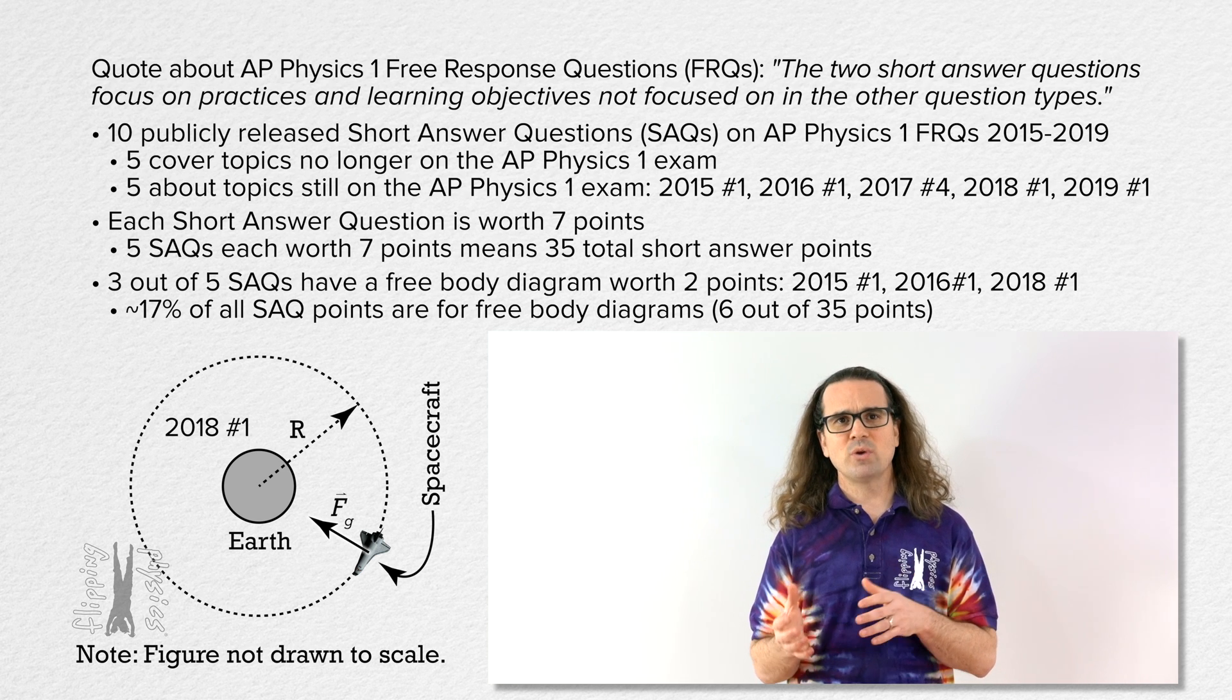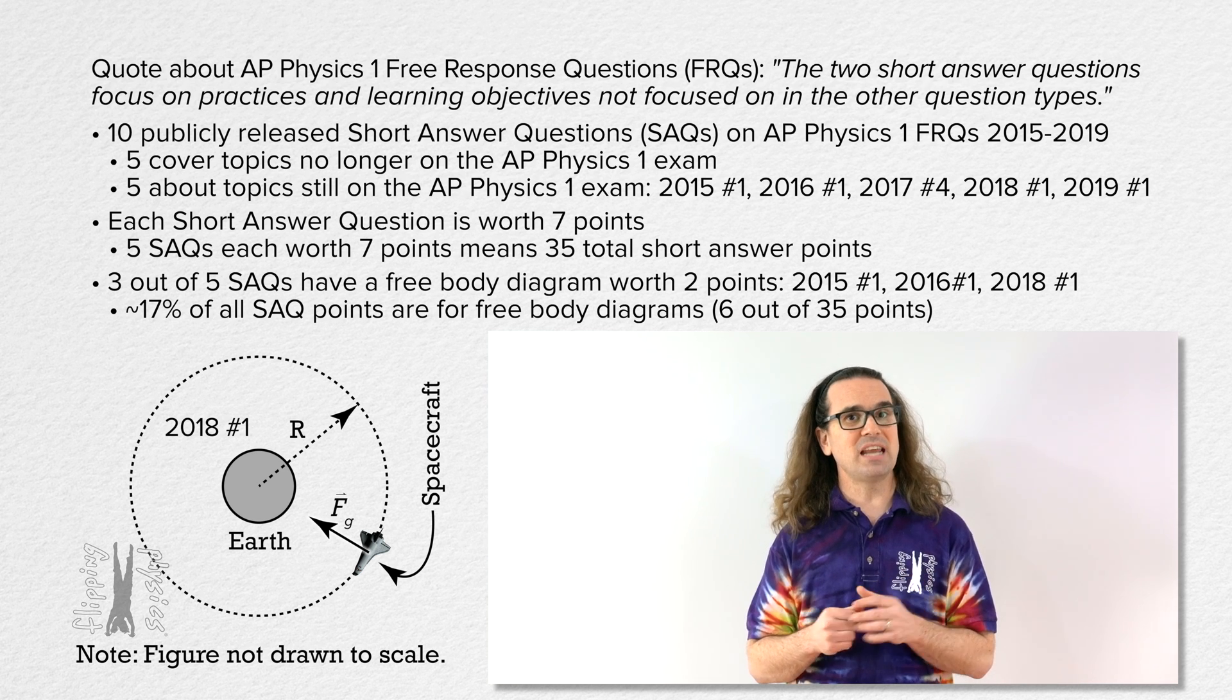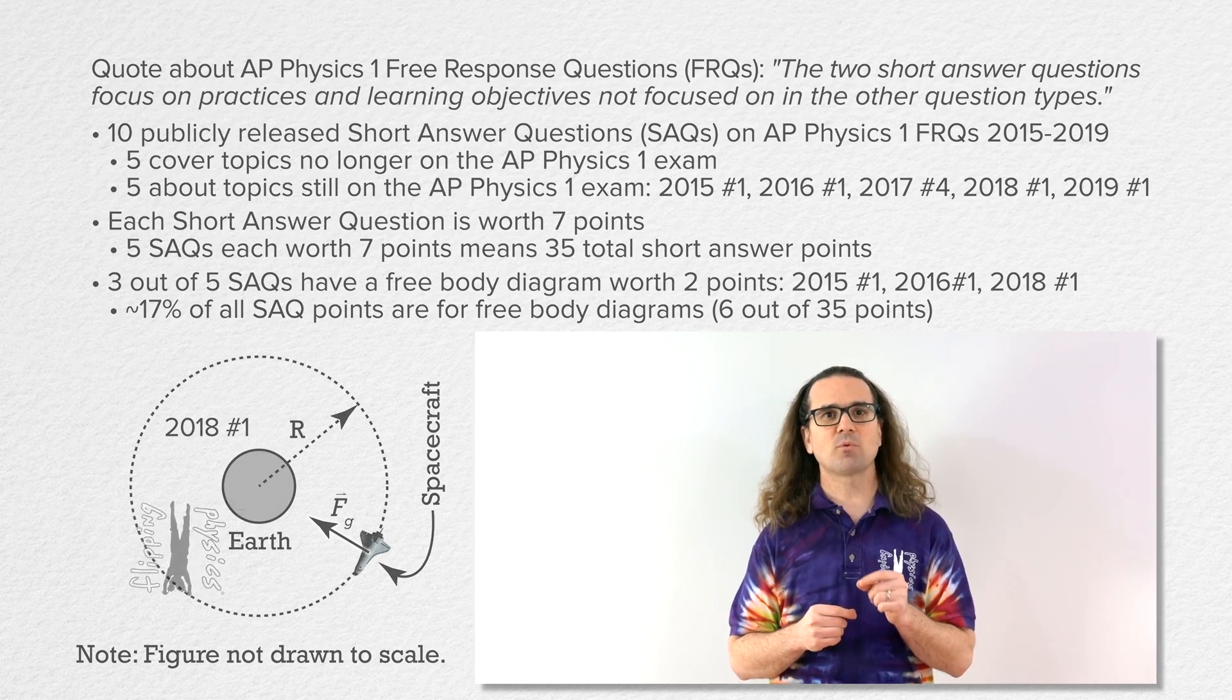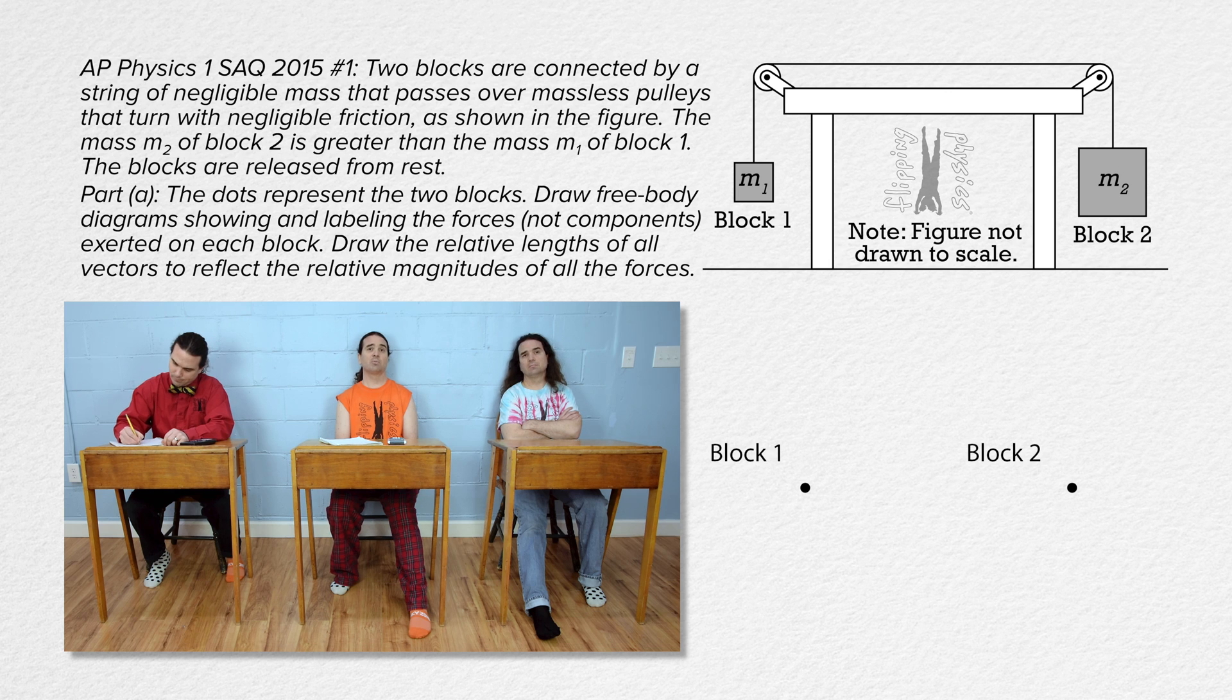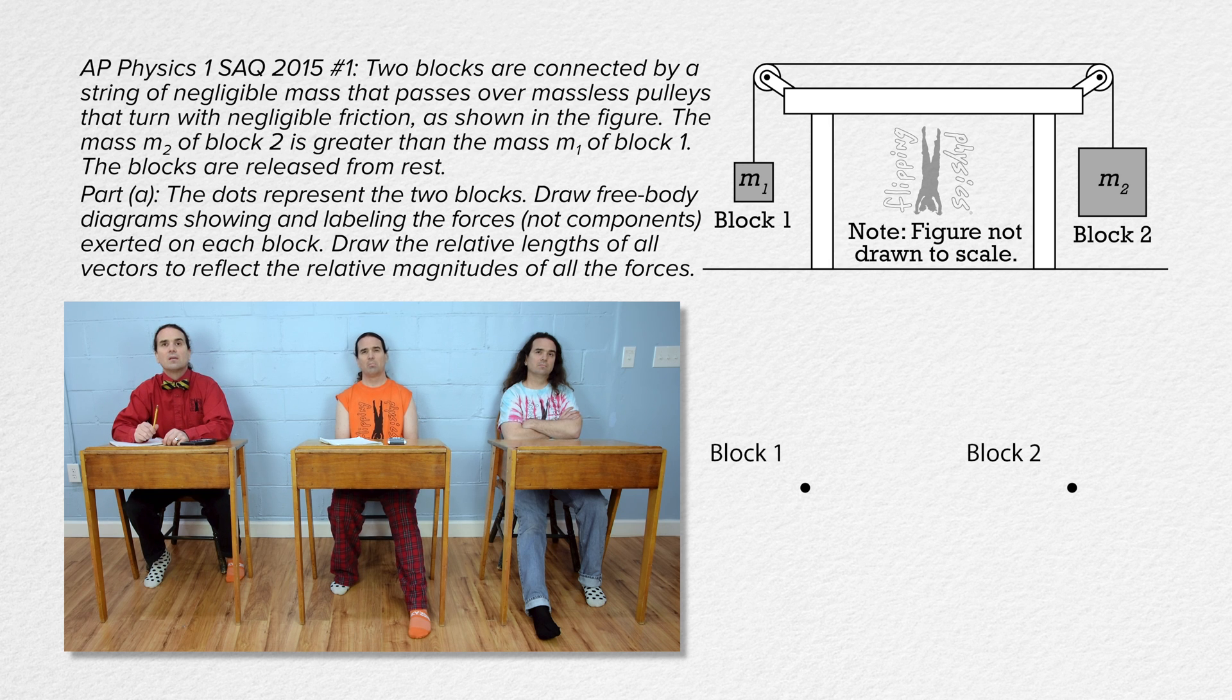Bobby, please read from the 2015 AP Physics 1 exam question number 1 through part A. Two blocks are connected by a string of negligible mass that passes over massless pulleys that turn with negligible friction as shown in the figure. The mass M2 of block 2 is greater than the mass M1 of block 1. The blocks are released from rest.